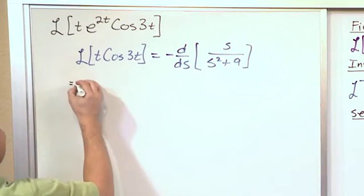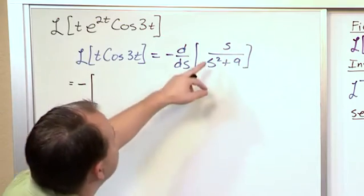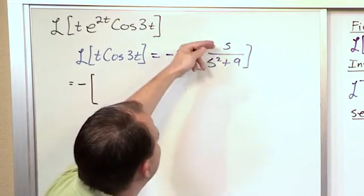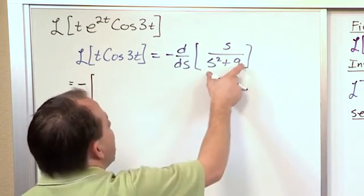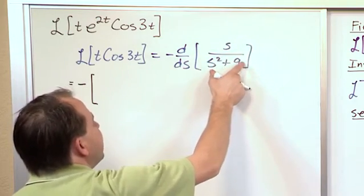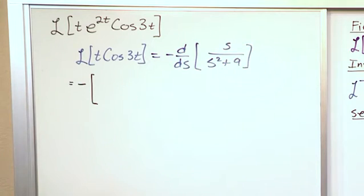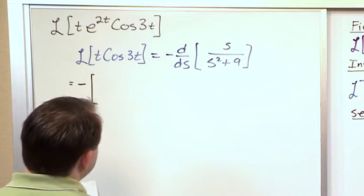So we'll carry this negative sign out here, and then I will open up a big bracket. You can do this derivative any way you want. I'm going to do a quotient, which is going to be the bottom times the derivative of the top minus the top times the derivative of the bottom over the bottom squared. You'll learn that back in Calculus 1, and unfortunately we have to remember some things.